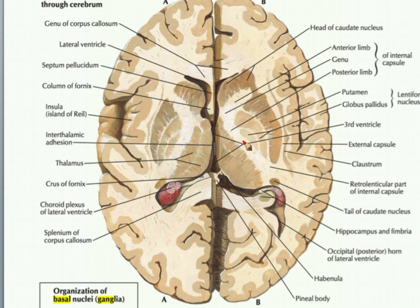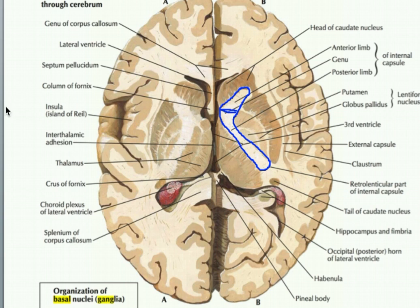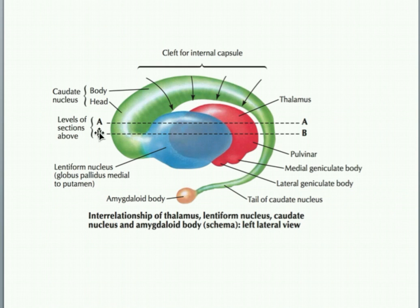We can see the internal capsule here, which I'll mark in a different color. This whole area is internal capsule. You can see how anteriorly, the internal capsule separates the lentiform nucleus - these two structures combined - from the head of the caudate nucleus. And posteriorly, it separates the lentiform nucleus from the thalamus. This image also has a separate image showing where the cuts were made - this is the A cut, this is the B cut, and this is where they come through and cut in the basal ganglia.